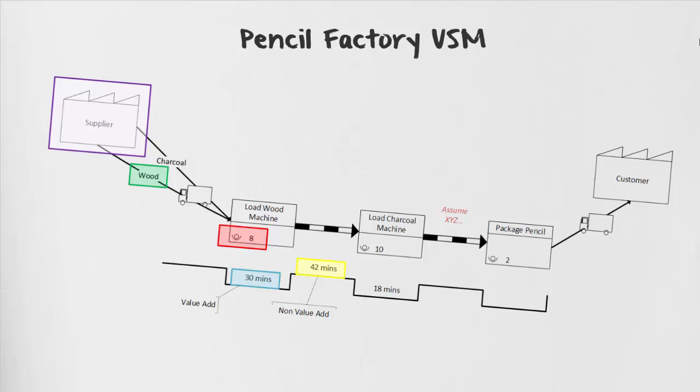You'll also notice that there's a note underneath 30 minutes that says value add, and then for our 42 minutes is referred to as non-value add. This is because delays and processes are non-value added activities. Nothing that we're doing during this time is helping transform that good and service into something the customer is willing to pay for. The objective of our value stream map is to identify as many non-value added activities, as many of those wastes, and then remove them through optimization.